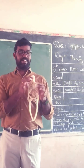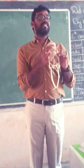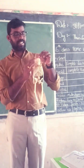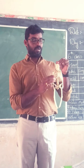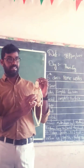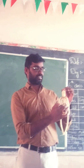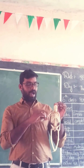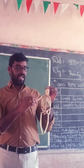Bones present in the head are called the skull. Bones present in the shoulder are called the clavicle. Bones present in the chest are called ribs. Bones present in the upper arm are called the upper bones of the arm.